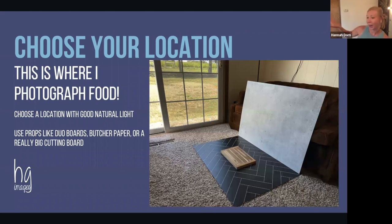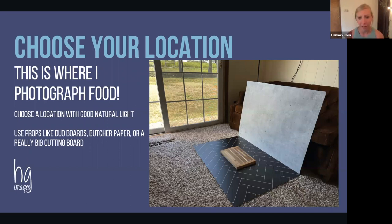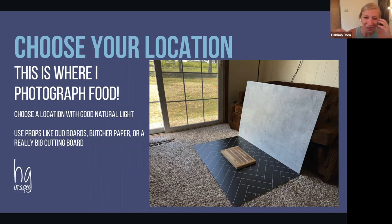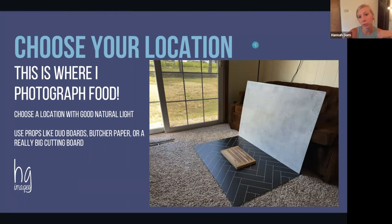I actually photograph my food right next to my desk, where there's a big sliding glass window that lets in so much awesome natural light. I have what are called duo boards from V Flat World — each side is a slightly different color, so I can make tons of different countertop and backsplash combinations. I'd recommend the bigger size for more angle options. If you're not in the market for those, feel free to use butcher paper or a big cutting board. Be resourceful and focus mainly on the light.